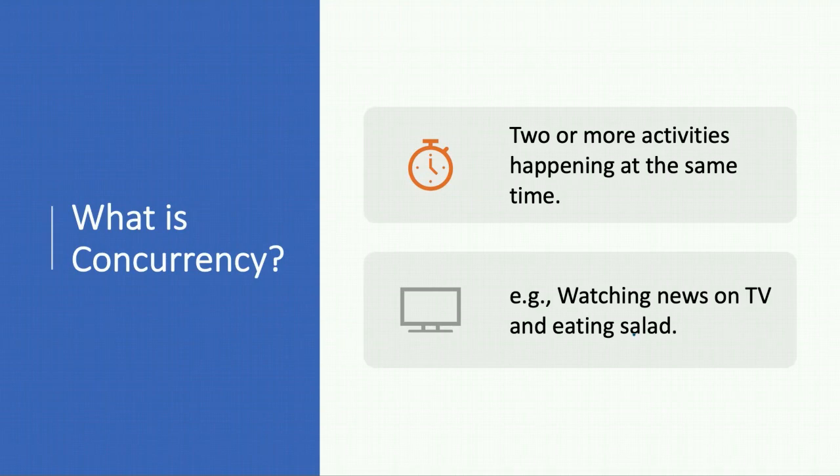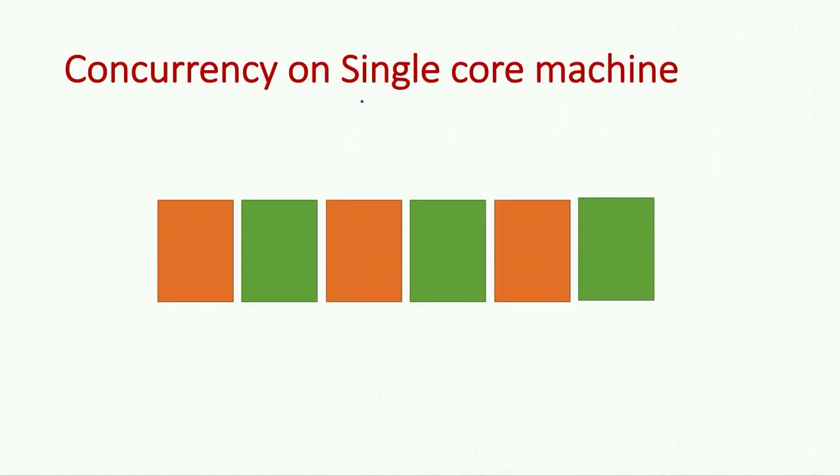There can be single core machines or multiple core machines. Now most machines would be multiple core, but for the sake of understanding, let's assume our machine has a single core that can execute one task at a time. But we can simulate concurrency.